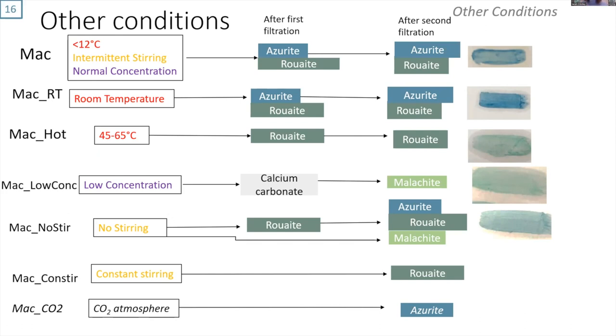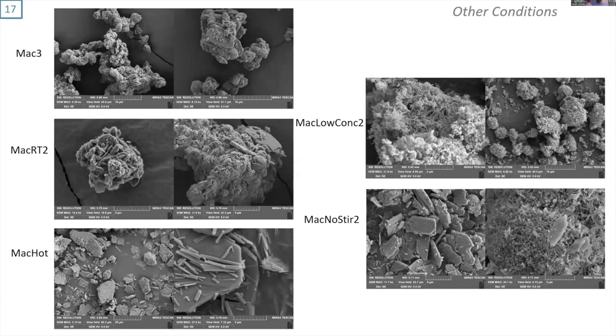This diversity can be seen in the SEM images. Those samples that contain azurite have this interlocking plate structure. Those that contain ruite have large flat plates. And there's a third morphology which kind of looks fluffy. It's either calcium carbonate or malachite, but we need to do some EDX on the samples to determine that.